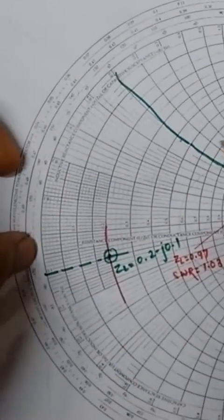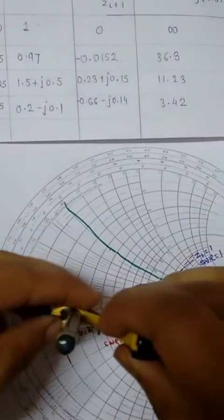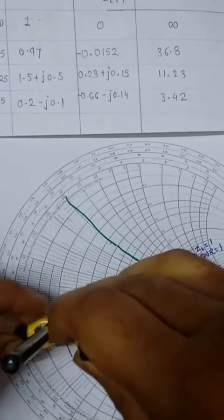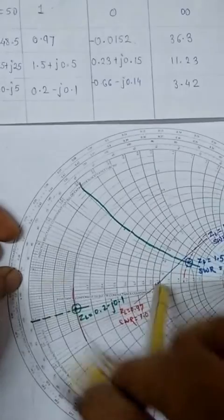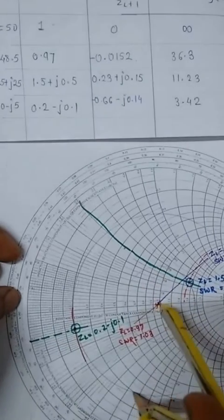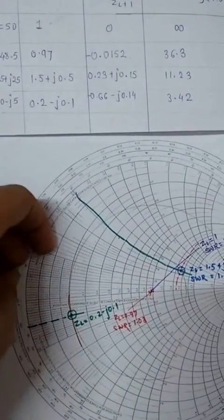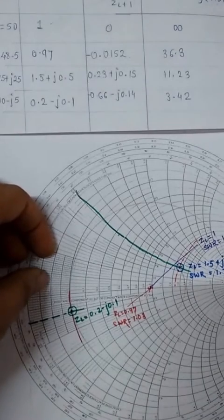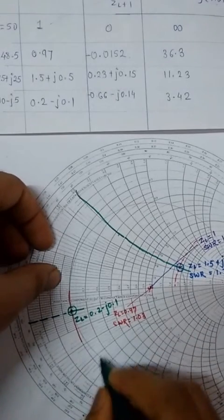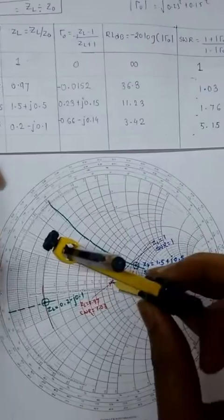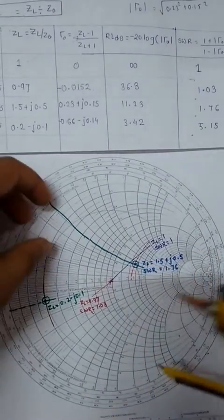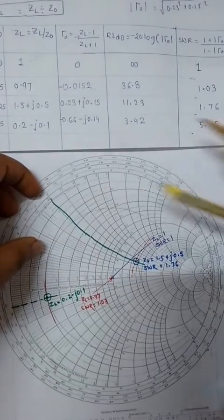I'm just extending this SWR circle. Draw a constant circle. Okay, this VSWR circle for - you can say this VSWR is around, let's see, we got this 5.15 on the analytical method.